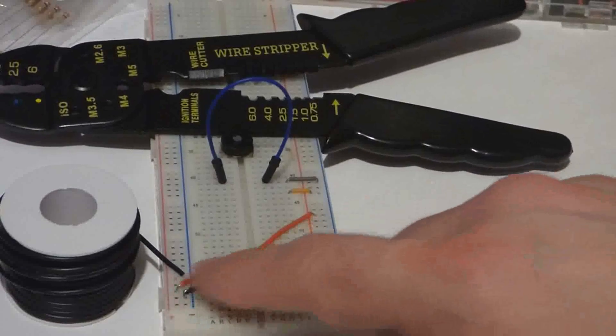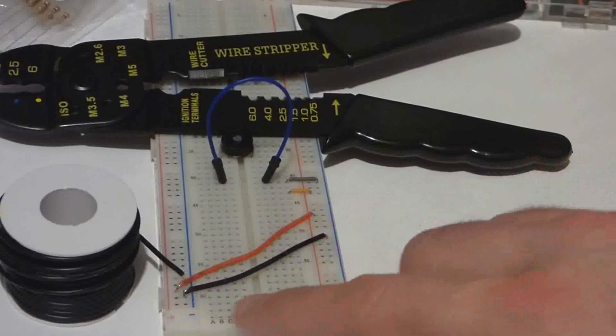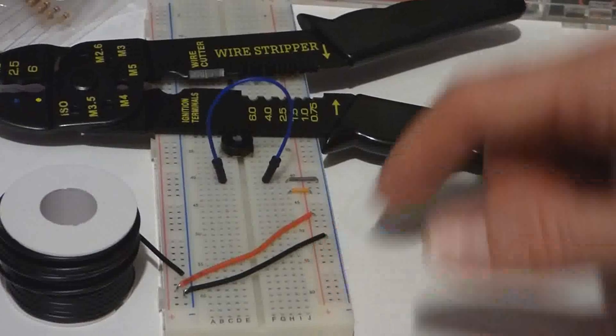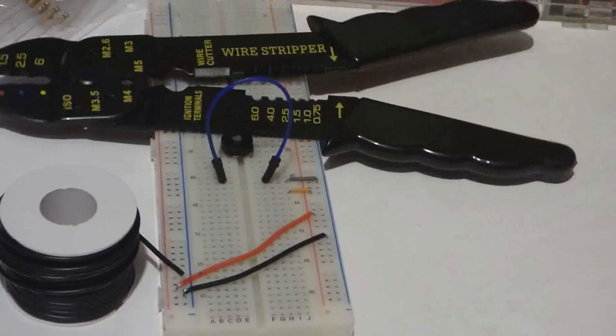So I'm going to make a couple jumpers like I did these before. As you can see, they're a little too long. I could trim them down but I'm going to go over this tool again in this video.